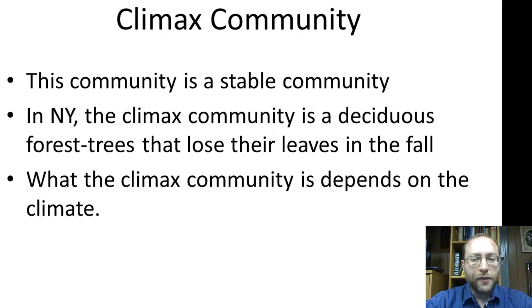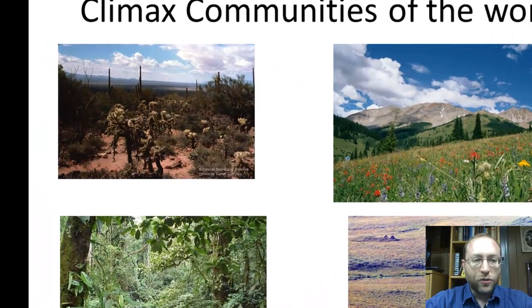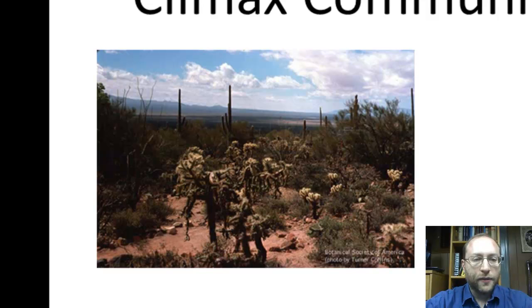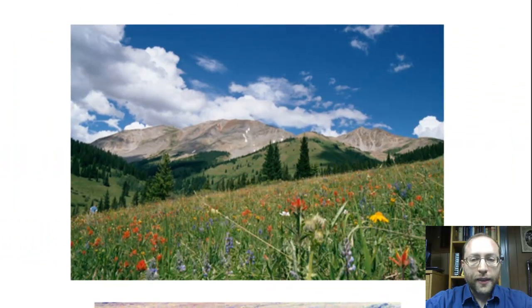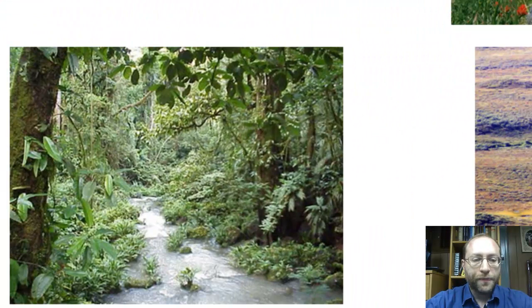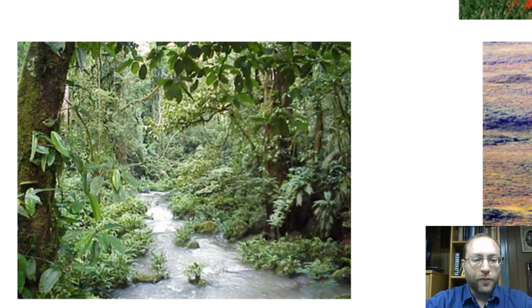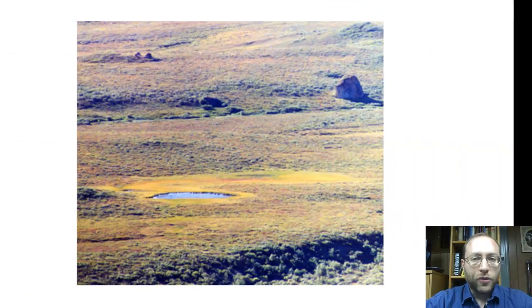What the climax community is depends on climate. Here in New York it's deciduous trees. If you go to a desert, you'll find a lot of cacti and also a lot of bare ground. In grasslands, you mostly find grasses — they don't get too much beyond that, which can be due to the amount of rainfall like in the prairies. Or in this case, in the Rocky Mountains, it's so high up that very few trees can grow. There's also the opposite — tropical rainforests. And in tundra, you basically have mosses and some grasses. That big rock you see is just about as tall as our school.